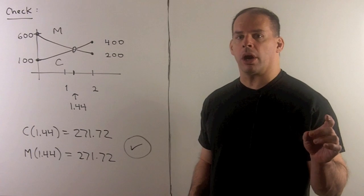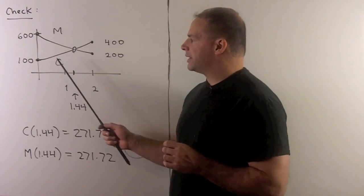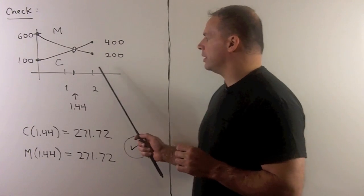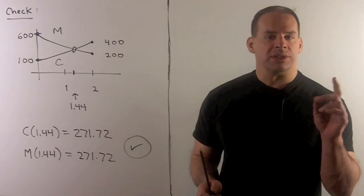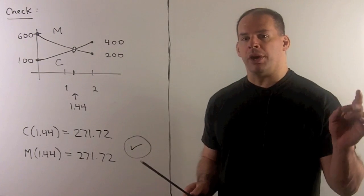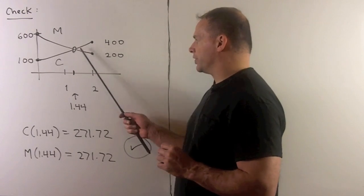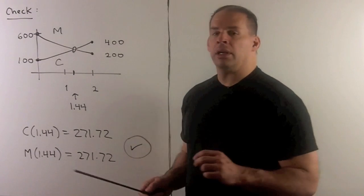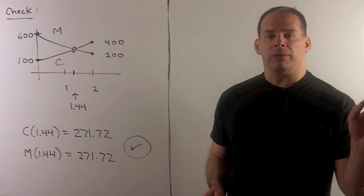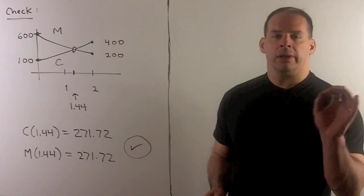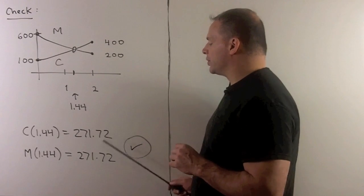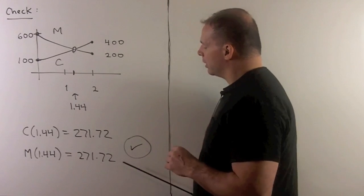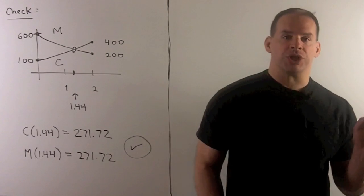Of course, we check our work. If I take our values at t equals 0, t equals 2, we connect them. We see that we expect our answer between 1 and 2. So 1.44 is reasonable. If we go and put 1.44 into our equations, you have to pull out your calculator. We have 271.72 for both. So again, our work checks out.